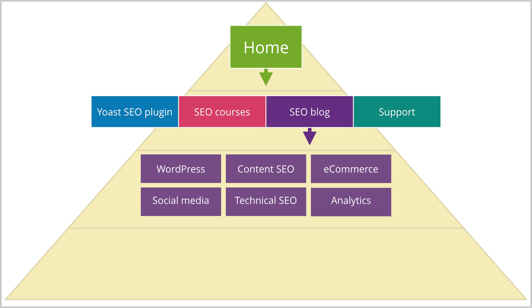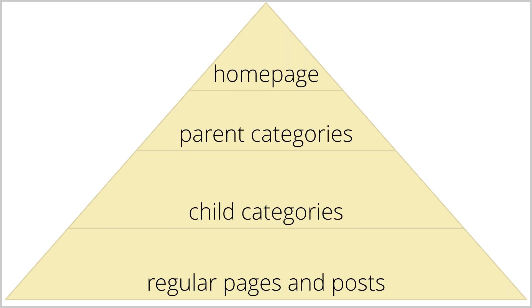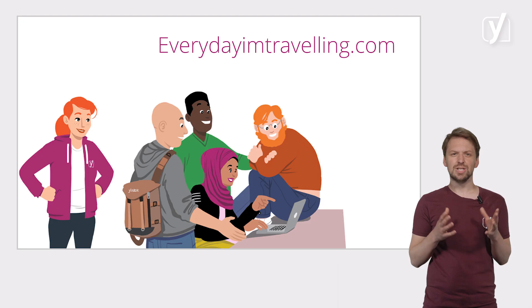Now, under these child categories, there's a level with all the individual posts we have on our website. So in our case, there are four levels: home page, parent categories, child categories, and then regular pages and posts.